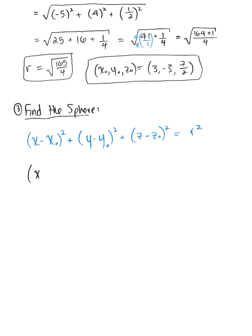Plugging in what we found, we've got (x - 3)² + (y - (-3))² + (z - 7/2)² equals (√165/4)².